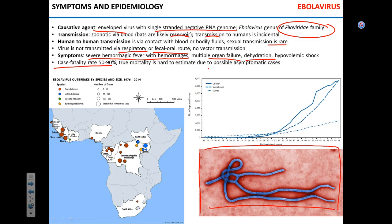Case fatality rate differs from true mortality. True mortality would account for every person exposed and infected and every person who died. In reality, some people who get Ebola become seropositive — their immune system produces antibodies — but they never develop full-blown disease. They recover completely and remain unreported. Recent studies in Africa confirm there are asymptomatic or mild cases that go undetected.